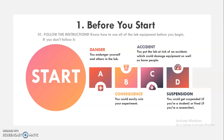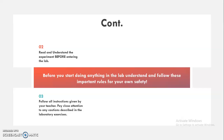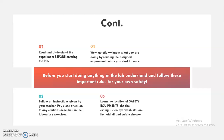There are several important rules you can add under this category. The second rule: read and understand the experiment before entering the lab. The third: follow all the instructions given by your teacher — pay close attention to any cautions described in the laboratory exercises. Fourth: work quietly and know what you are doing by reading the science experiment before you start. Fifth: learn the location of safety equipment — the fire extinguisher, eyewash station, first aid kit, and safety shaft.